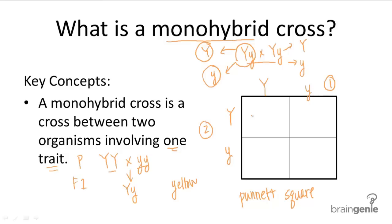And now you can simply just fill out your Punnett square. You have in the first quadrant, big Y, big Y. In the second and third quadrant, you have big Y, little y. And in the fourth quadrant, you have little y, little y.